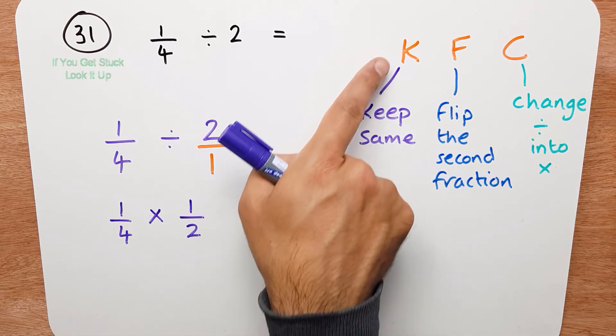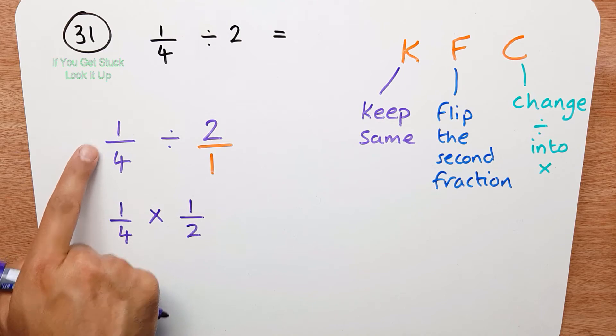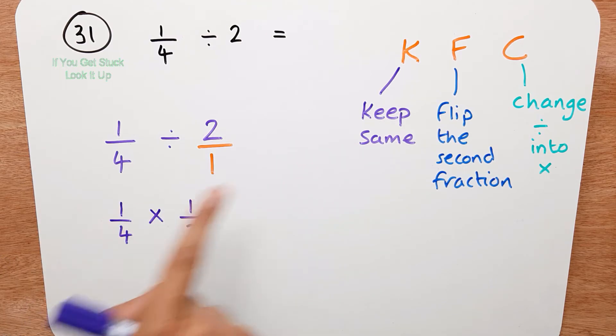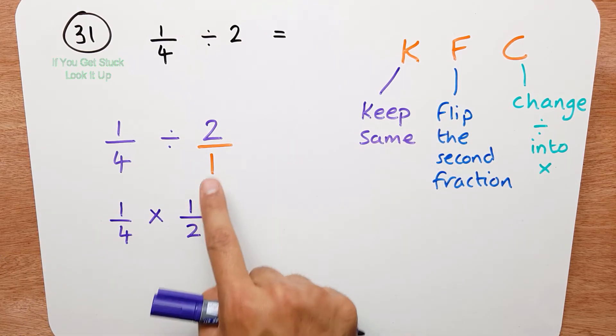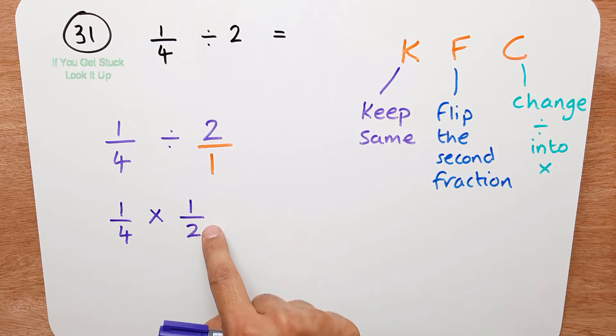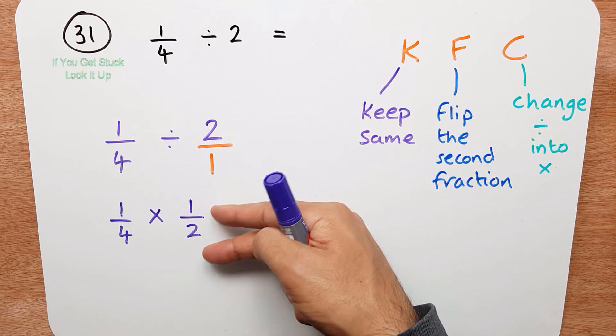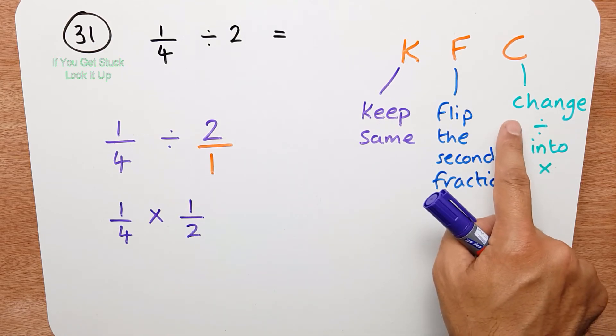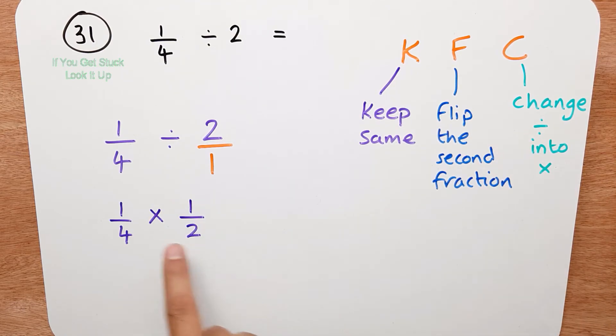So let me go through that again. Keep the first fraction the same, which we've done. Flip the second fraction. So we've turned 2 over 1 into 1 over 2. So we flipped it over. And finally we've changed the divide into a times.